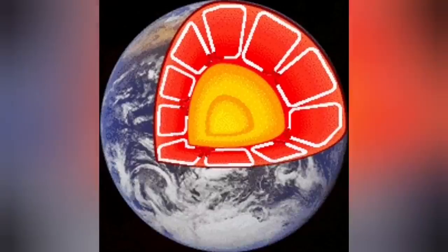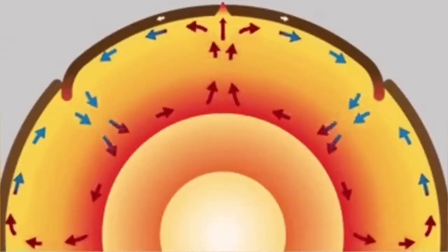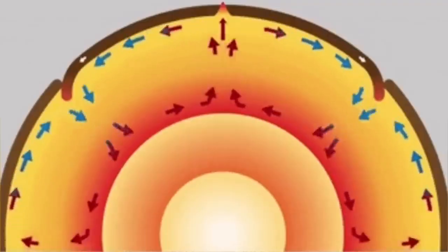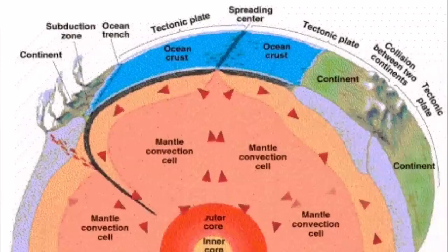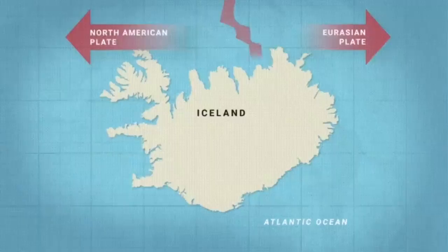This heat creates convection cells through the mantle of the Earth, which rises to the surface and cracks the hardened solidified crust of the Earth, we call it lithosphere. And through these cracks, magma can erupt.